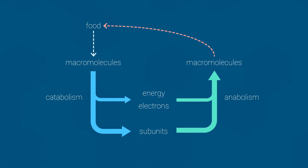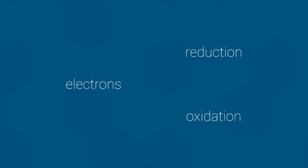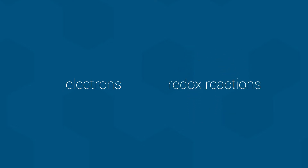Let's return to the electrons for a moment since I mentioned them as being important. Metabolism is a long series of chemical reactions occurring inside organisms. Since we are also dealing with the transfer of electrons, we must therefore be dealing with reactions that involve reduction and oxidation — in other words, metabolism is very much about redox reactions.